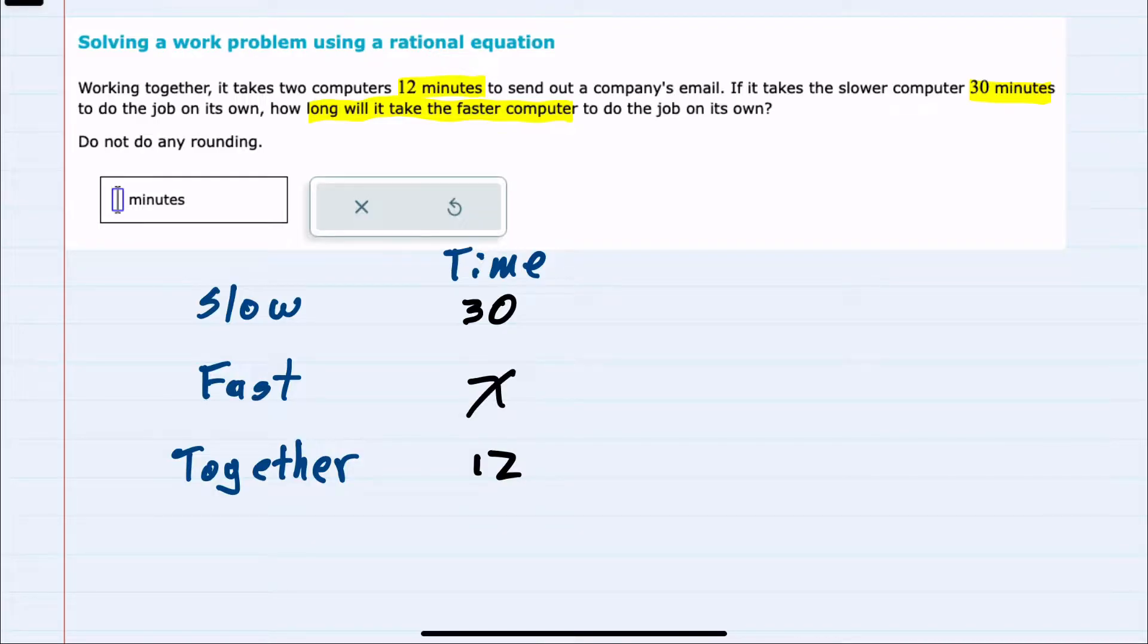But in order to write an equation about these computers working together, I can't just add the times working individually to get the time working together. But I can add up their rates.